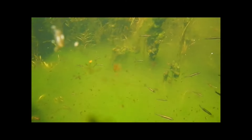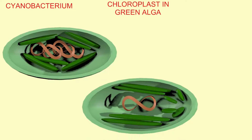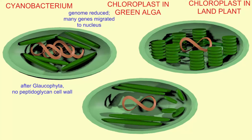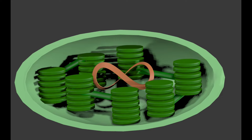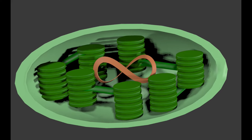As cyanobacteria evolved into the chloroplast of green algae, which evolved into the chloroplast of land plants, the genome was reduced and many original genes from the cyanobacteria migrated to the nucleus. After the algal group known as glaucophyta, there is no longer any peptidoglycan cell wall. The thylakoids lost their connection to the inner plasma membrane. By land plants, there are multiple chloroplasts — a green alga typically has only one — and the thylakoids form stacks known as grana.